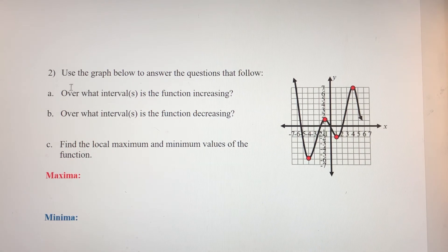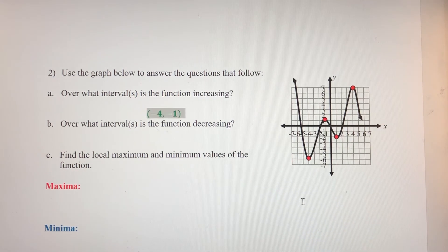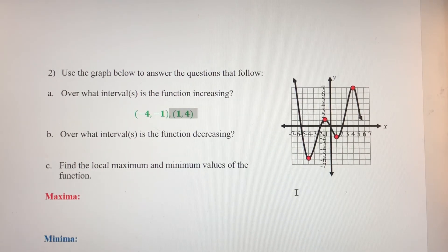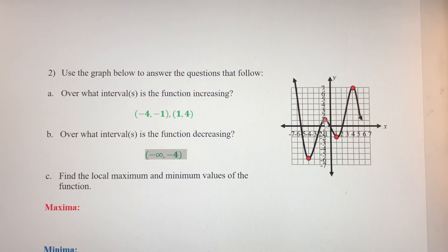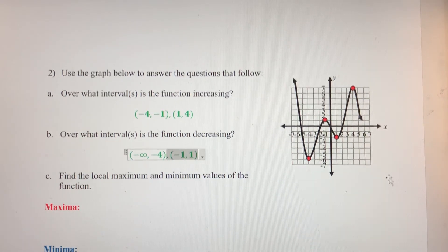For example 2, this function is only increasing over two intervals: from negative 4 to negative 1, and from 1 to positive 4. There are three intervals over which this function is decreasing: from negative infinity to negative 4, from negative 1 to positive 1, and then from 4 to positive infinity.